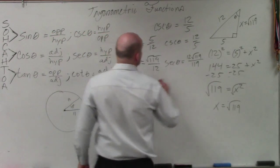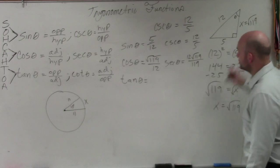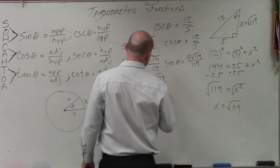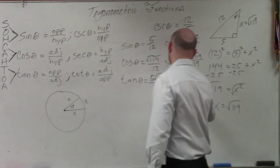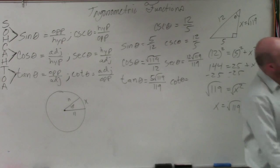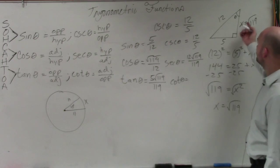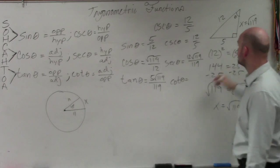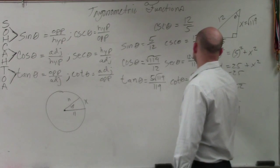Tangent of theta is going to be opposite over adjacent. So I already know I'm going to have to rationalize the denominator. So again, I'm trying to speed along. Usually I'll show my work, but since I'm kind of short on time today, I'm going to speed along. Cotangent is adjacent over opposite. So that's square root of 119 over 5.